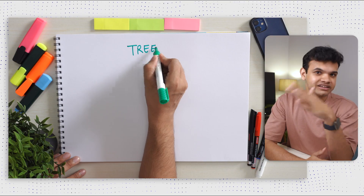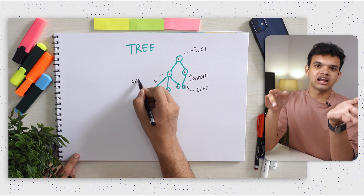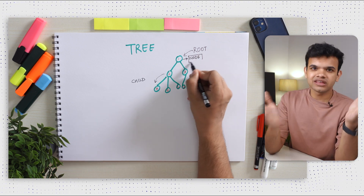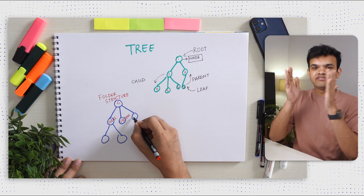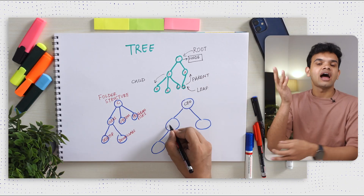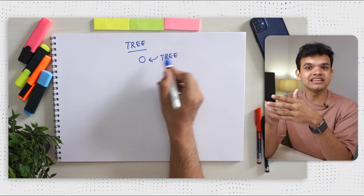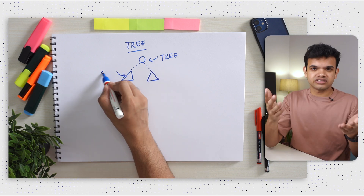Now let's move on to nonlinear data structures, starting with tree. We have the root node on top and a few levels of nodes below it. Every node has a parent node and is the child of its parent node. Nodes that don't have any child nodes are known as leaf nodes. Think of it as a hierarchy — like a folder structure: C drive, then users, then desktop and documents, or system folder or program files. Or think of a startup hierarchy: CEO at the top, then CTO and CFO, then managers and engineers. Even a single node is a tree, and we can have subtrees as well.